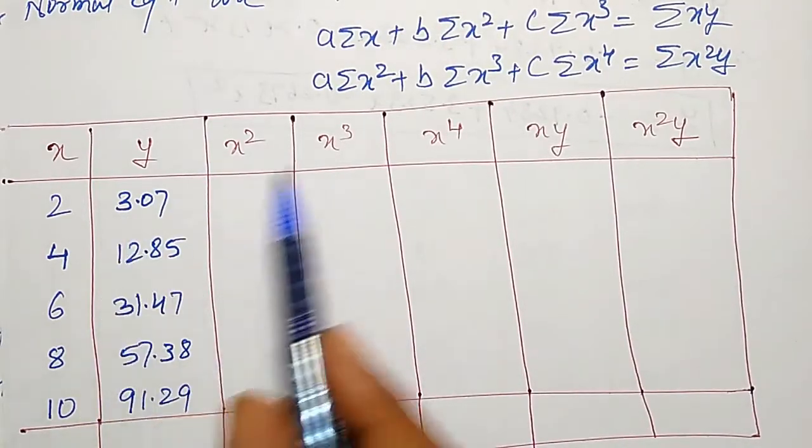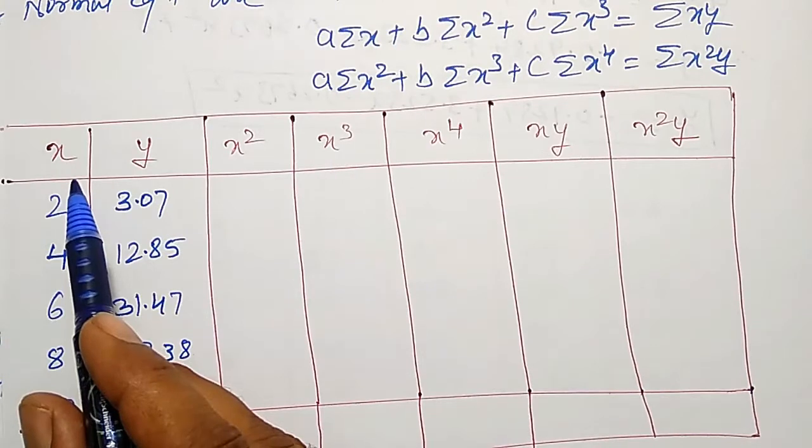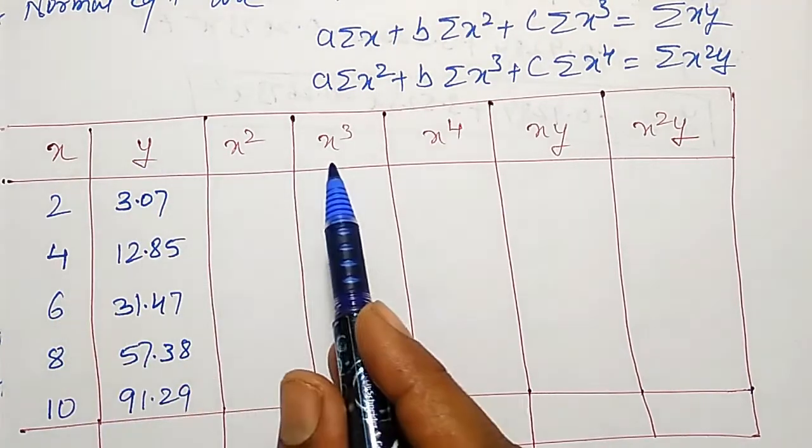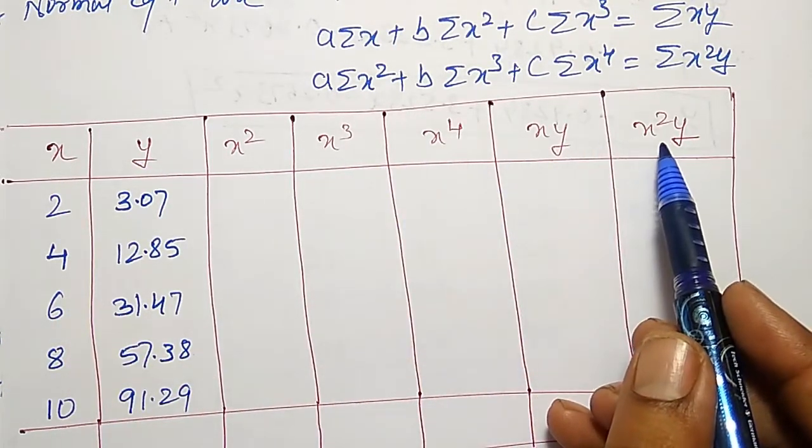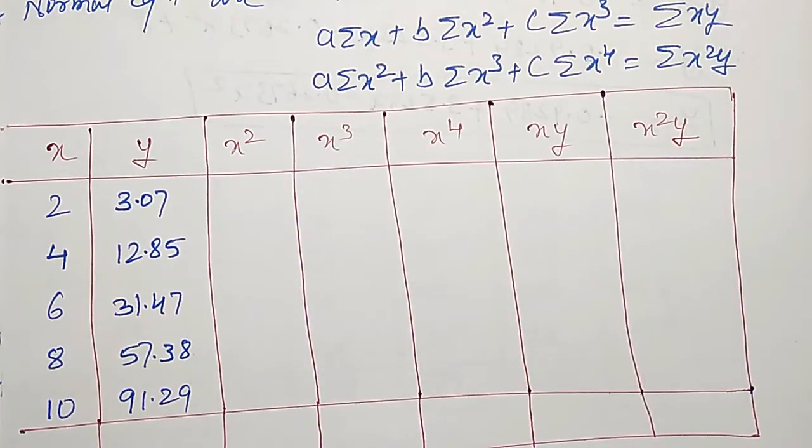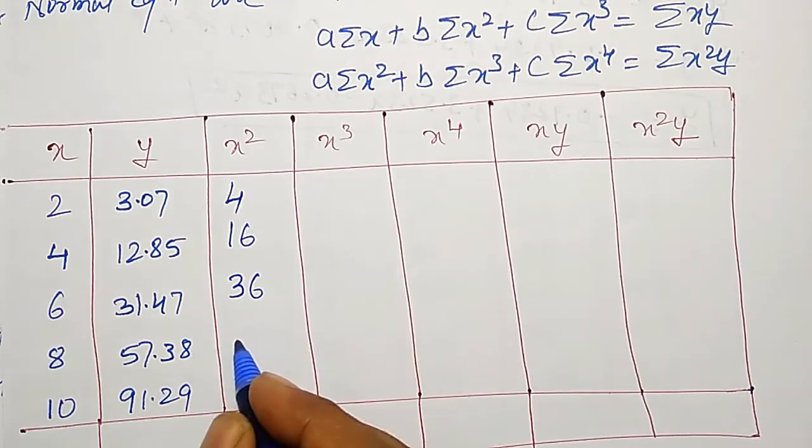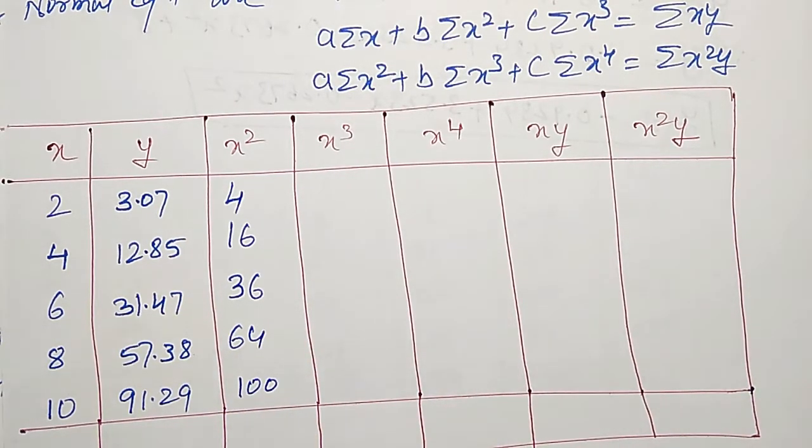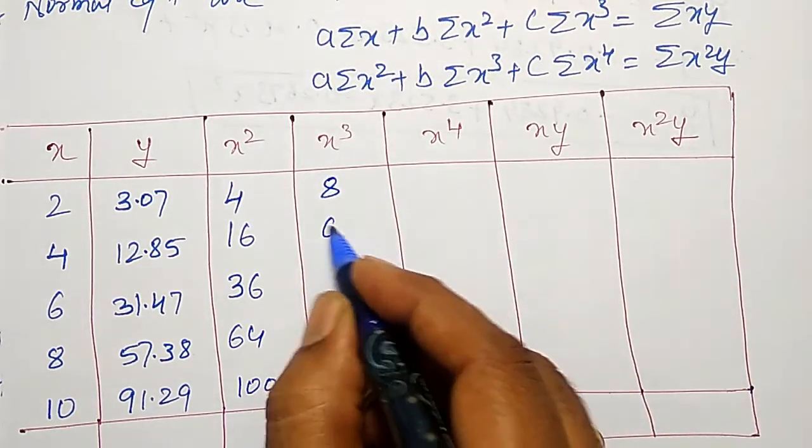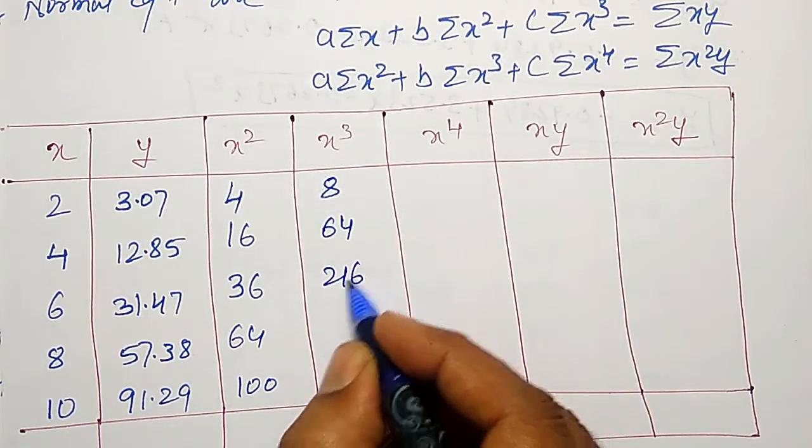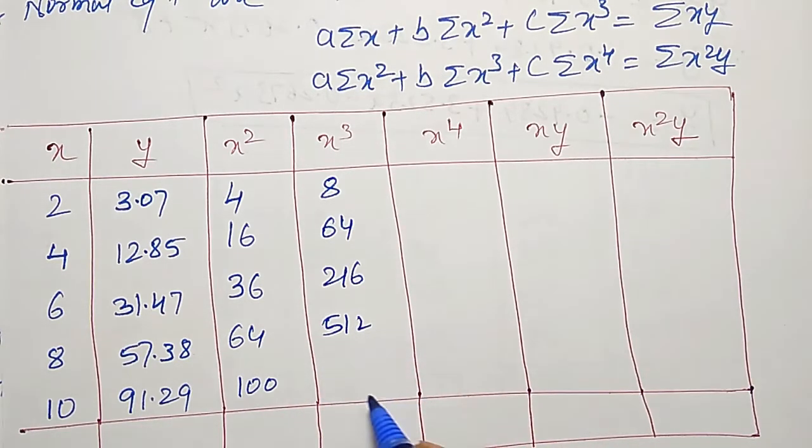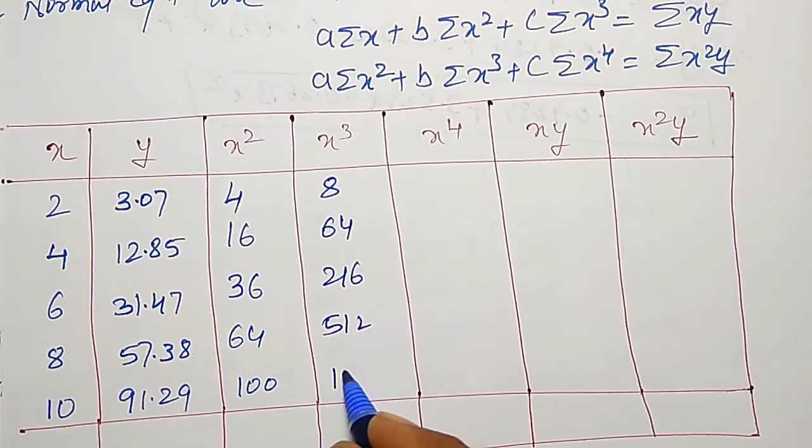According to the normal equations, I have prepared the columns x, y, x square, x cube, x raise to 4, xy and x square y. Those values I have to calculate now. 2 square is 4, then 16, 36, 64 and 100. Like that, x cube values as 8, 64, 216, 512. All these things you can calculate using calculator and then come back here.